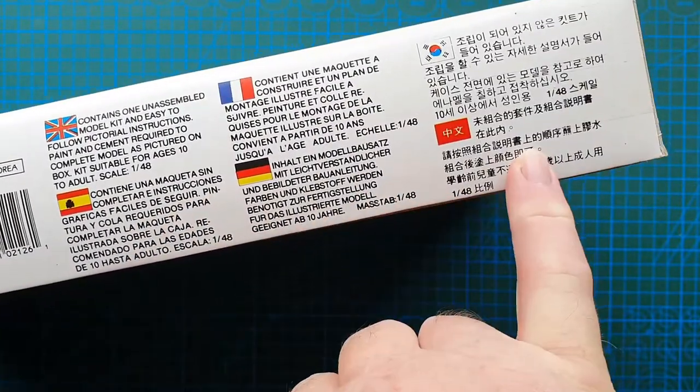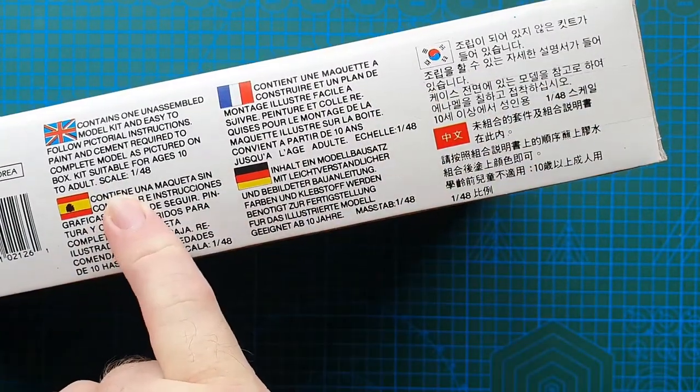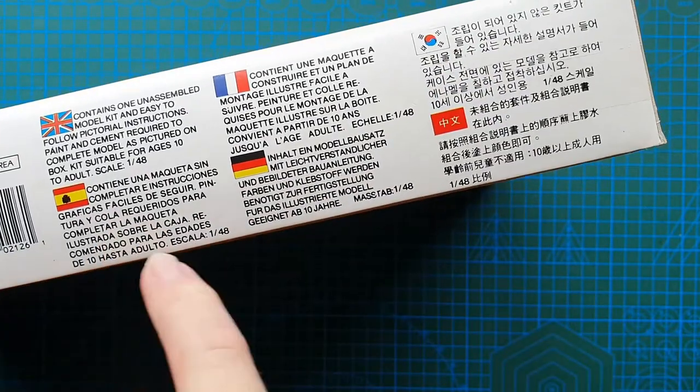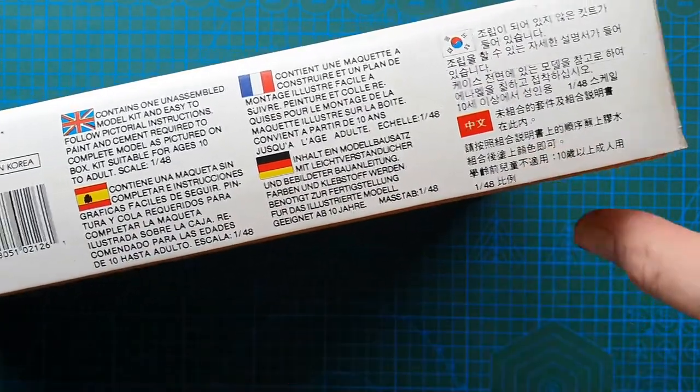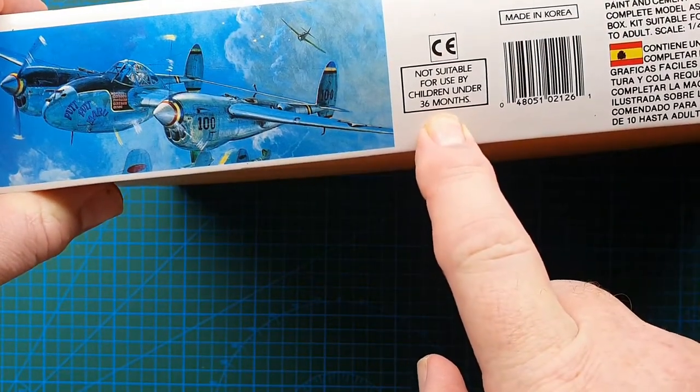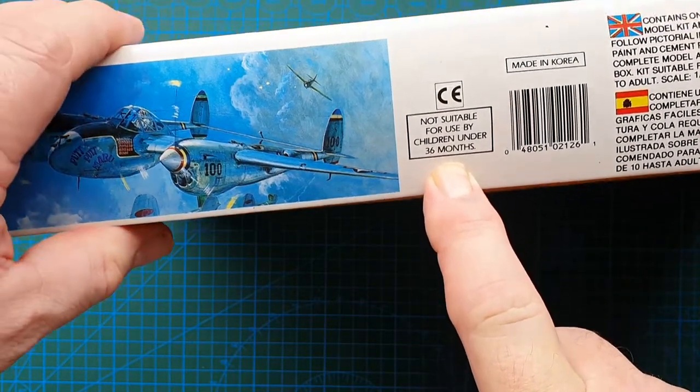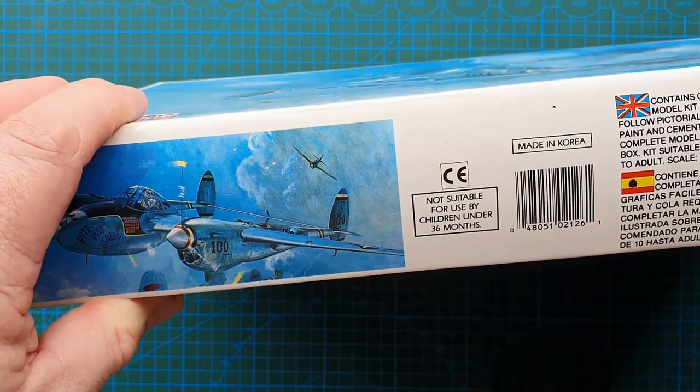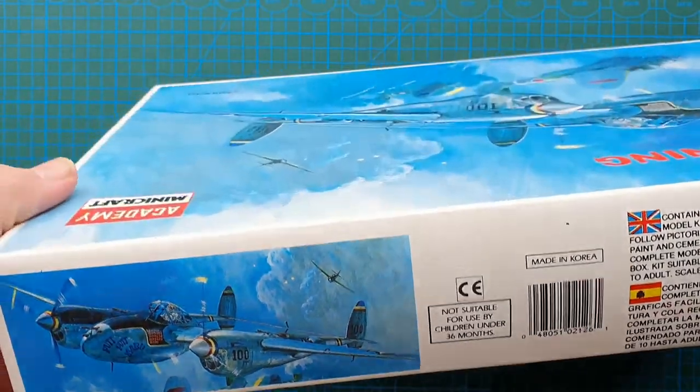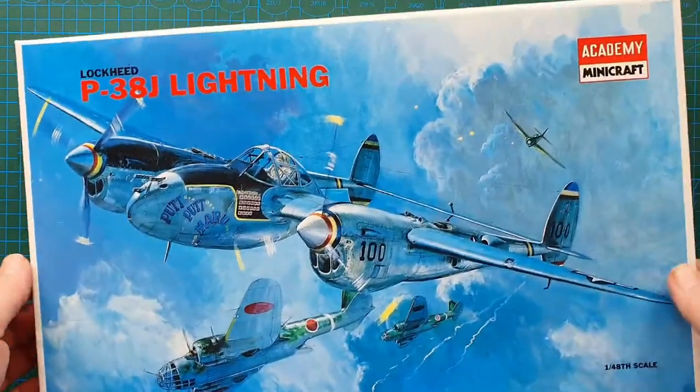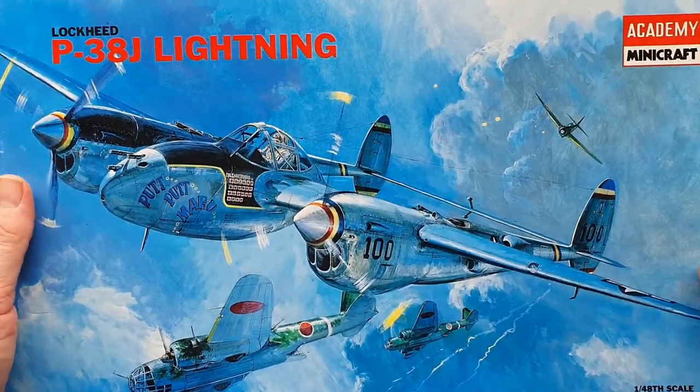Usual warnings, six languages: English, French, Korean, Spanish, German, Chinese. Not suitable for use by children under 36 months. You wouldn't trust a child under three years to play with your P-38, would you? Anyway, that's the box. Let's find out what's inside.